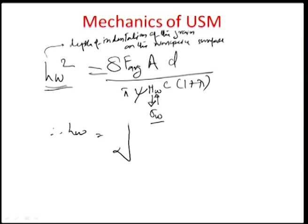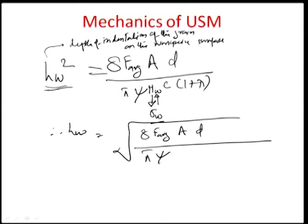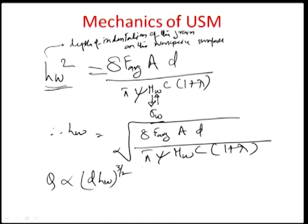Therefore, h_w equals the square root of 8 F_average times A times d, divided by pi times psi times h_w times c times (1 + lambda). If we substitute this value of h_w into the equation for Q, recalling that Q was earlier determined to be proportional to d times h_w to the power of 3/2 times Z times frequency nu.